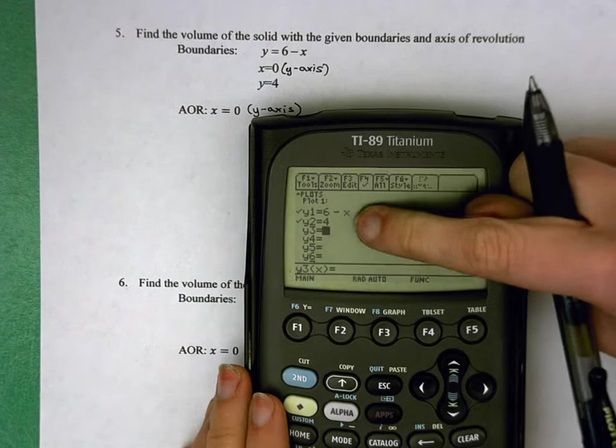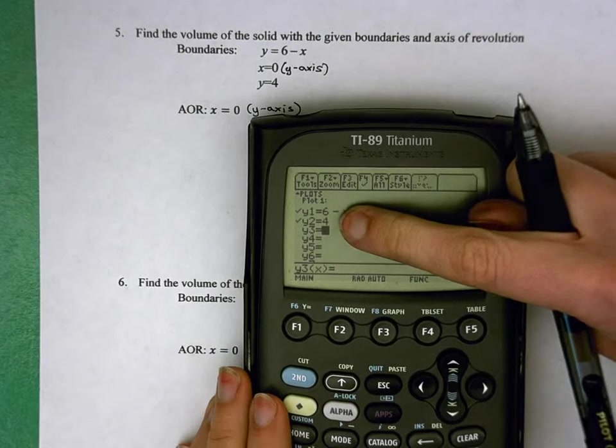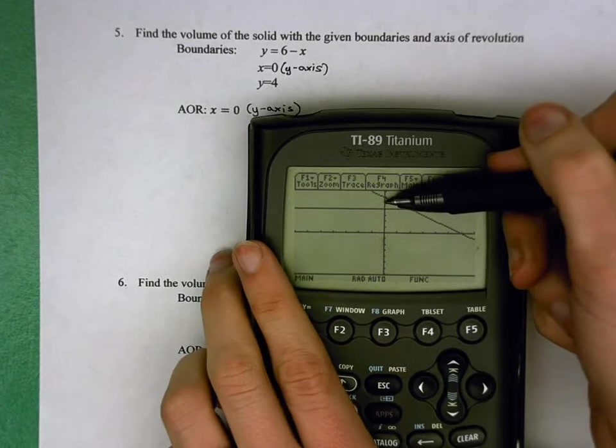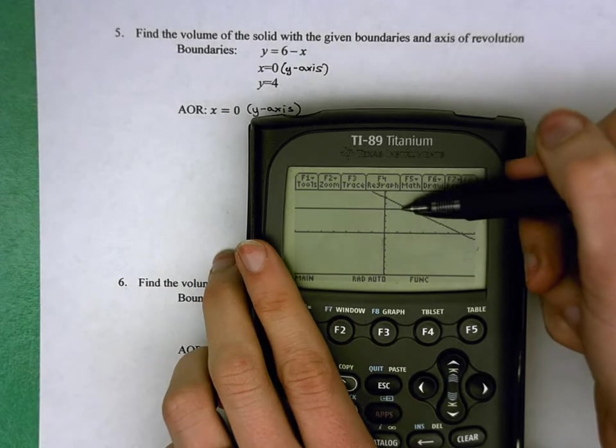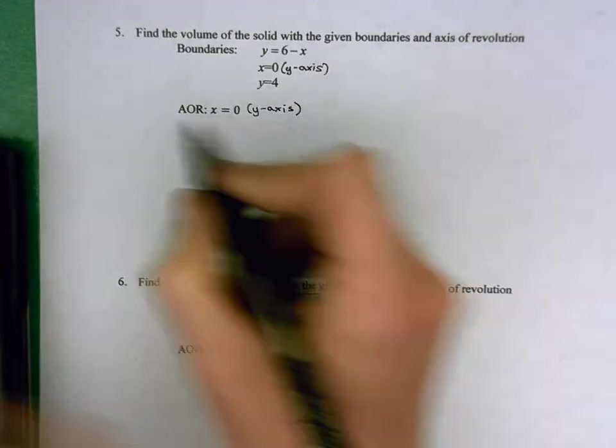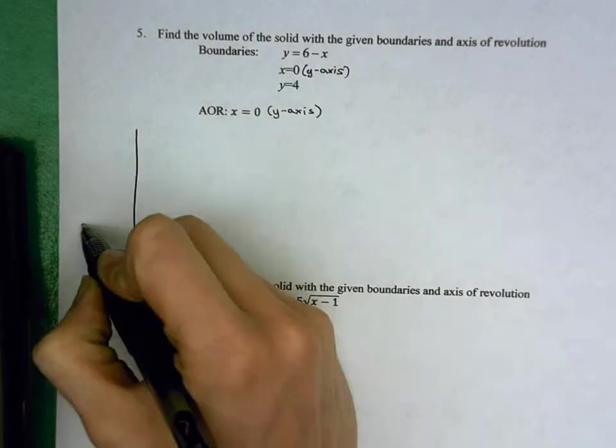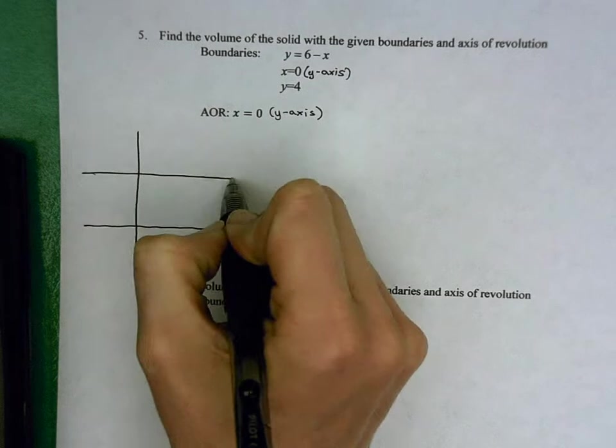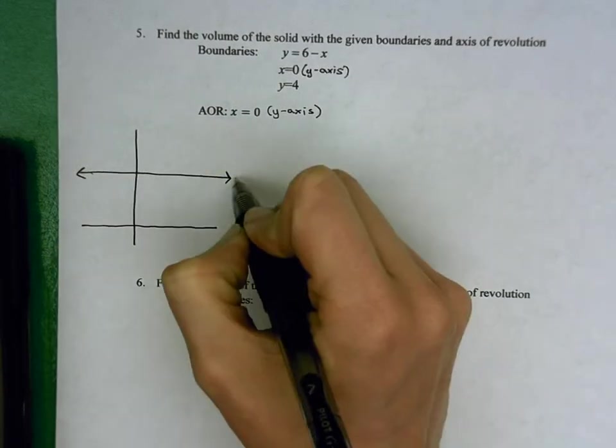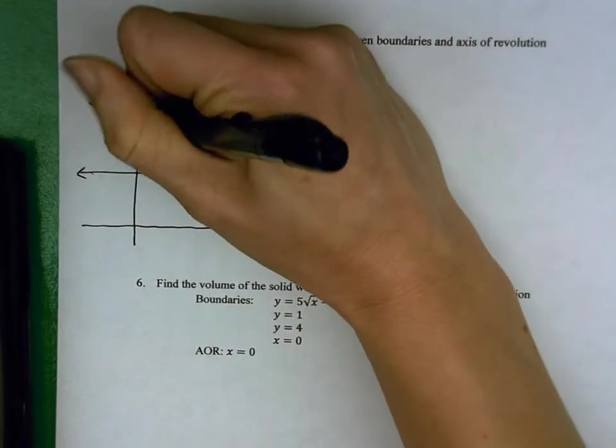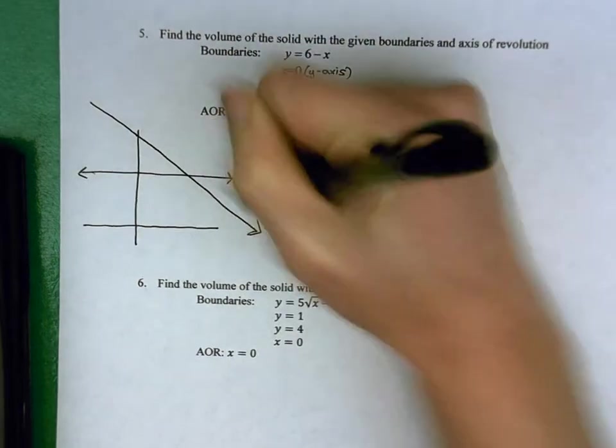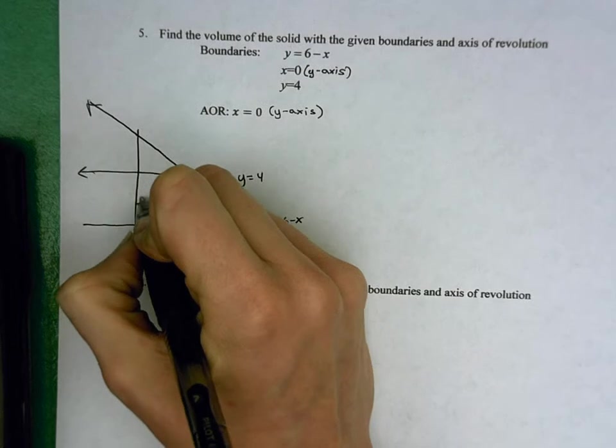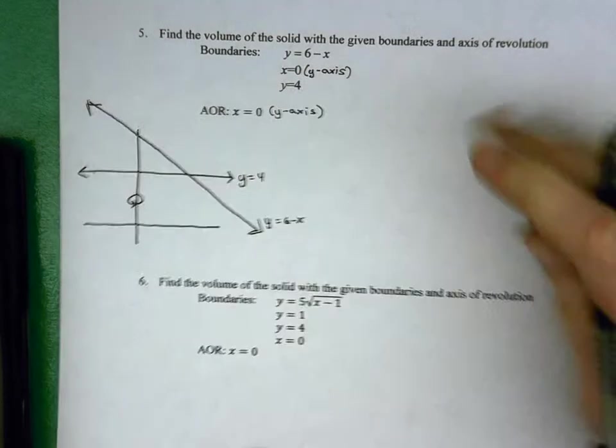So we go to y equals, we plug in 6 minus x and y equals 4, and we graph it. We get our sketch here. We're going to be revolving this triangular region. I'll go ahead and sketch that. We have y equals 4 and our y equals 6 minus x, and we're revolving it here around our y-axis.